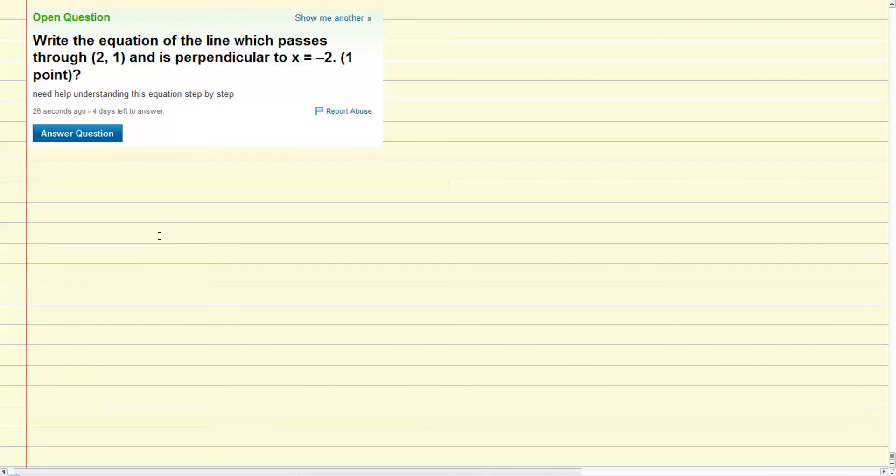Okay, so there's two things that we need to be able to do in order to solve this problem. The first thing is to be able to write an equation of a line given a point and its slope. So let's just do a quick example.